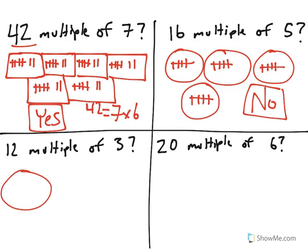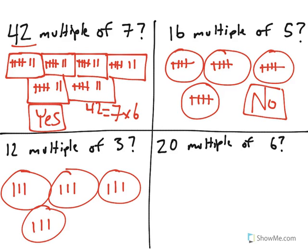And you can continue on. Is 12 a multiple of 3? 4, 5, 6, 7, 8, 9, 10, 11, 12. Yes, it is, because 3 times 4 equals 12. You can see we have four groups of 3, and that is equal to 12.